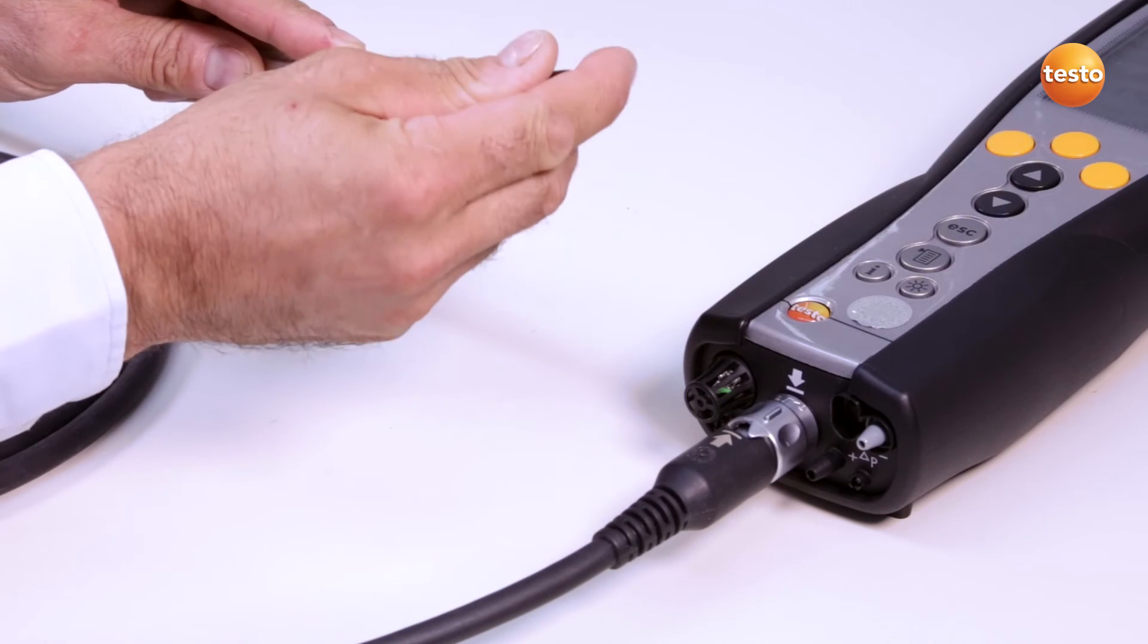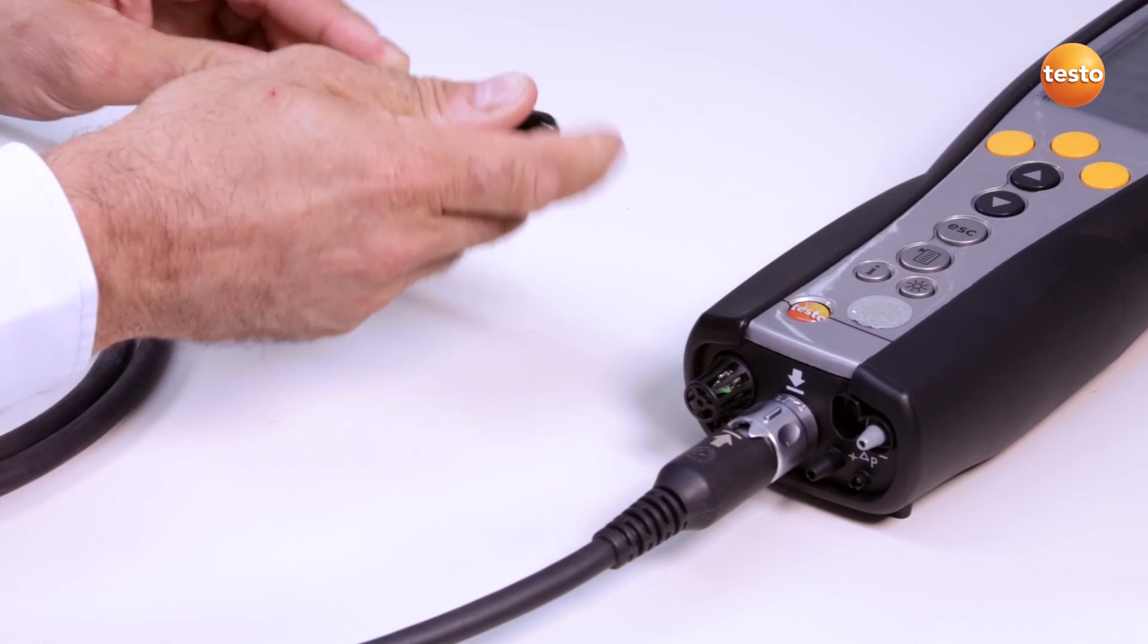Now I put the plastic cap on the tip of the flue gas probe so that its opening is completely covered.